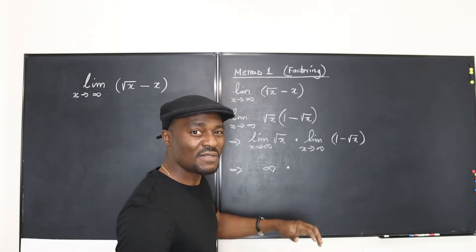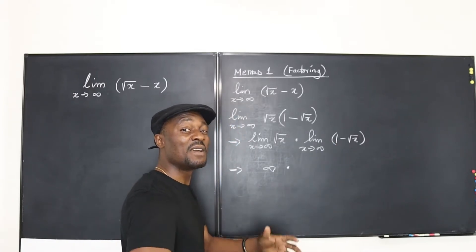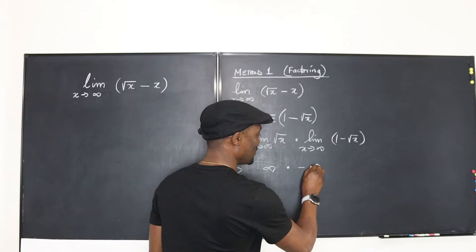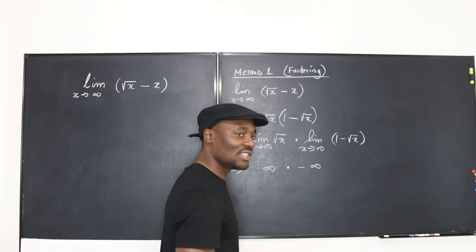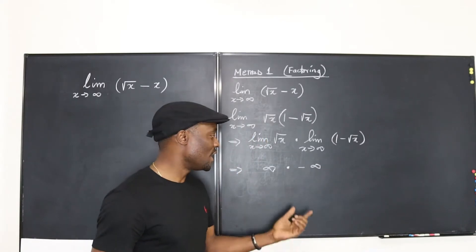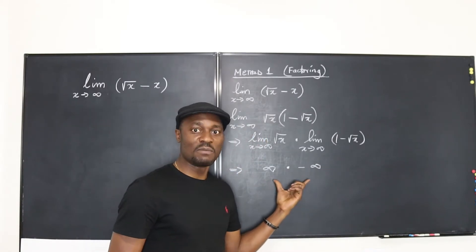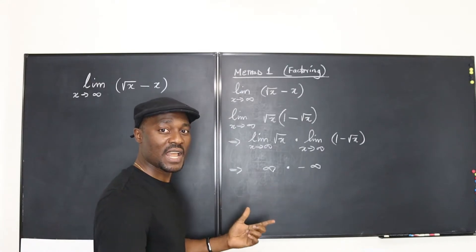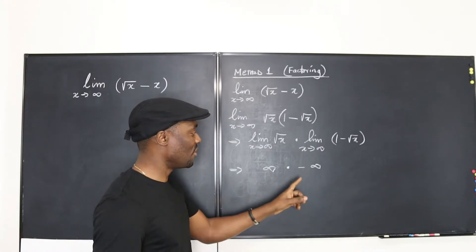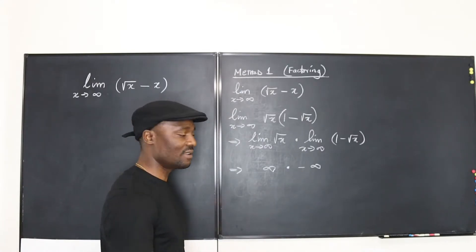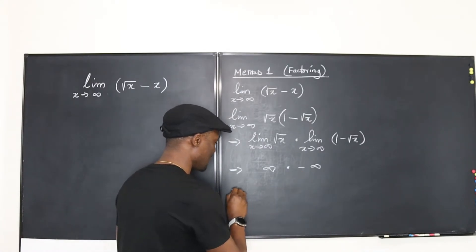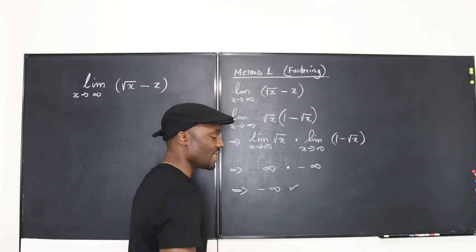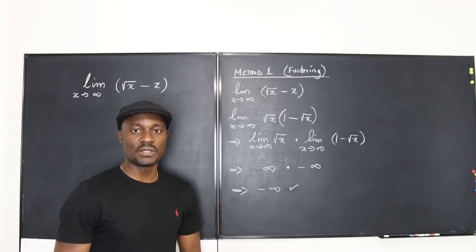One minus infinity is negative infinity, because you're subtracting a very large number from one, which gives you a very large negative number. So this is infinity multiplied by negative infinity. You can multiply infinity by infinity and what you get is infinity — but this one is negative, so the final answer is negative infinity.